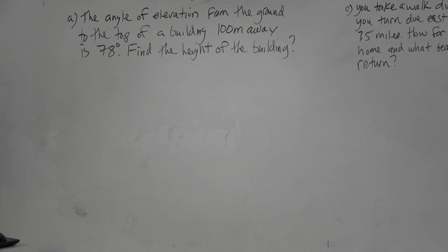So if I was going to have the angle of elevation from the ground to the top of the building 100 meters away is 78 degrees, find the height of the building. So again, first thing guys,